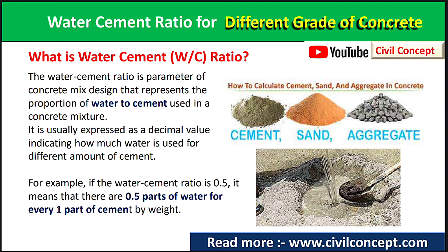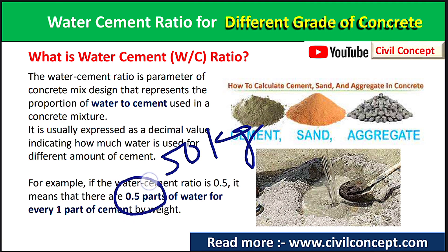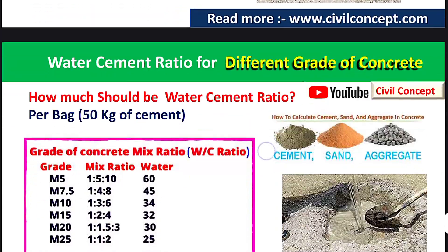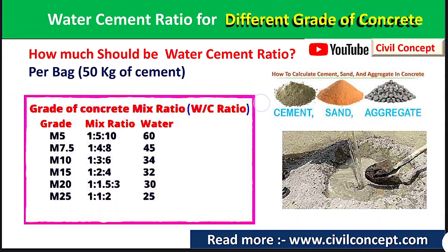For example, if the water-cement ratio is 0.5, it means there are 0.5 parts of water for every one part of cement by weight. So if we are using 50 kg of cement and the water-cement ratio is 0.5, then 25 liters of water should be used for that 50 kg of cement.